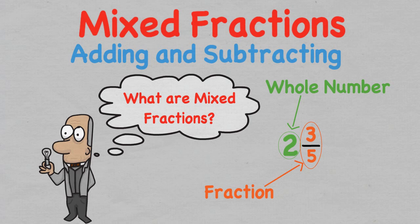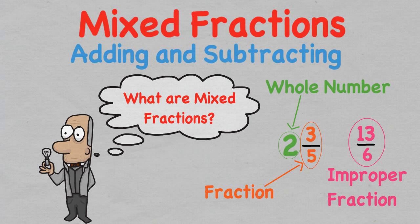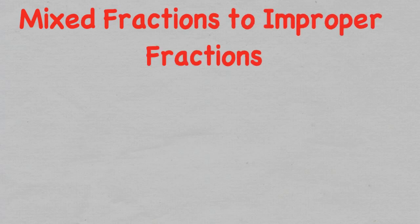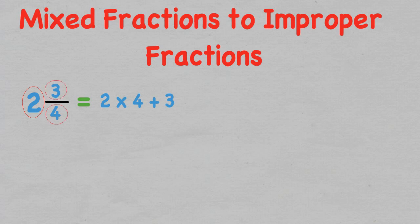When looking at a mixed fraction, we need to add a step before making the fractions alike: we need to change the mixed fraction into an improper fraction, which means the number in the numerator spot is higher than the denominator. For example, we have two and three over four. To change this mixed fraction, we multiply the whole number two by the denominator four, and add the numerator three. This leaves us with 11 over four.